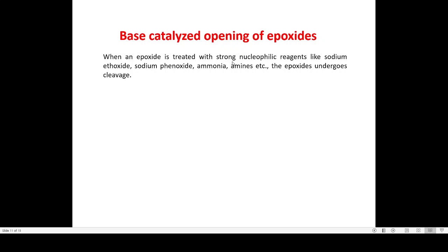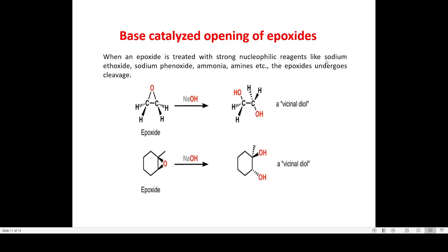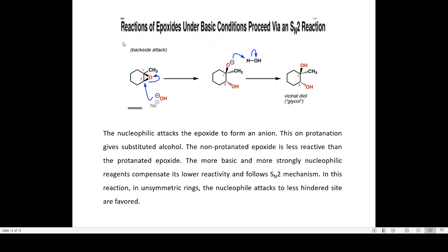Coming to the base-catalyzed opening of epoxide: when an epoxide is treated with strong nucleophilic reagents like sodium ethoxide, sodium phenoxide, ammonia, or amines, it also undergoes ring opening resulting in the corresponding product. Similar to the acid-catalyzed opening, when an epoxide reacts under basic conditions, we get a vicinal diol — either in a three-membered or six-membered ring — having two hydroxyl groups on two different carbon atoms. The reaction proceeds via the SN2 mechanism.